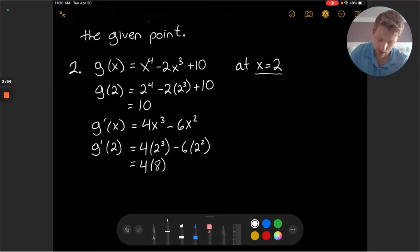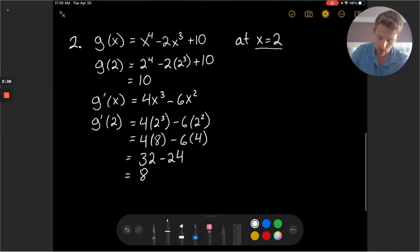And then minus 6 times 4, or we could write that as 32 minus 24 which gives us a slope of 8. So g prime of 2 is equal to 8 which is our tangent slope.